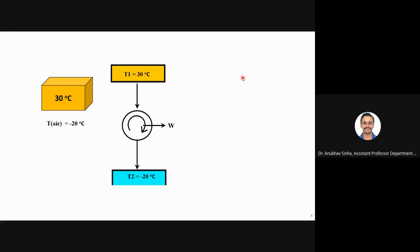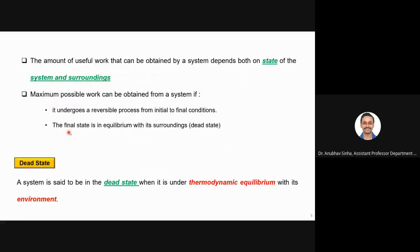When the temperature of the source becomes equal to the surrounding, we cannot obtain any work, and this is the maximum limit. This state is called the dead state. A system is said to be in a dead state when it is in thermodynamic equilibrium with its environment — the temperature of the system equals that of the surroundings. No more heat transfer can occur and you cannot use any heat engine.